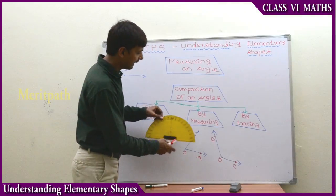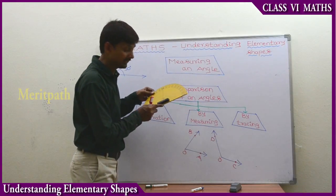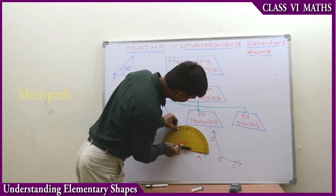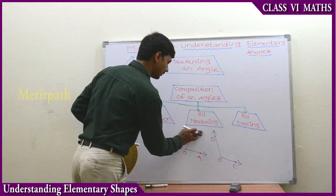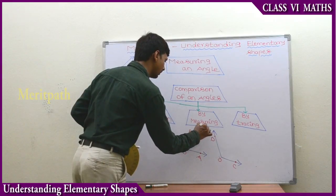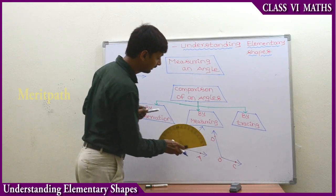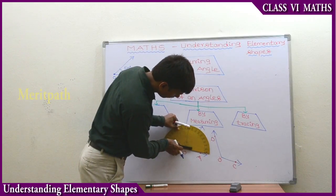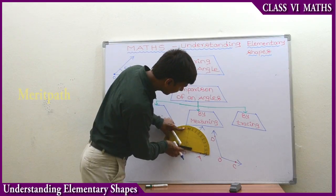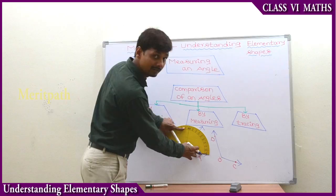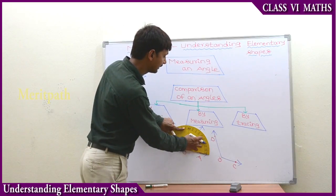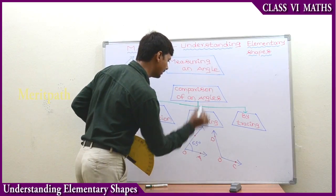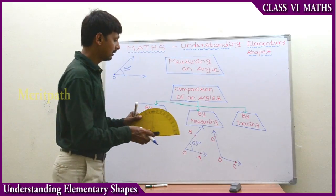So let us measure the first angle. We keep the centre of the protractor at O. Let us extend this ray, because we need to check what the angle is. The centre of the protractor is placed on the centre point. So we can observe: 0, 10, 20, 30, 40, 50, 60, and 65. So this is an angle of 65 degrees.